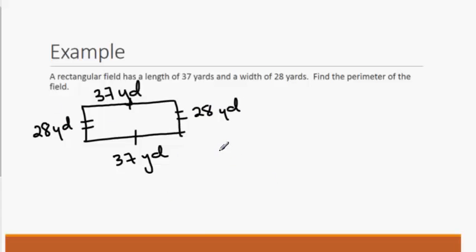Now to find the perimeter of this field, we can simply add up the sides: 28 plus 37 plus 28 plus 37. And when we do that, we get 130. So that's going to be 130 yards. And that's all that the problem is asking for is the perimeter.